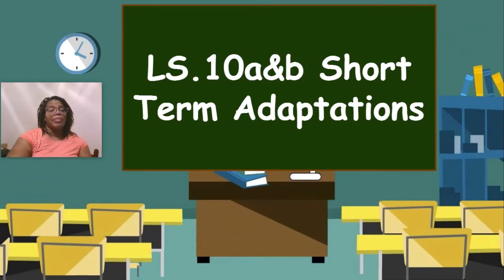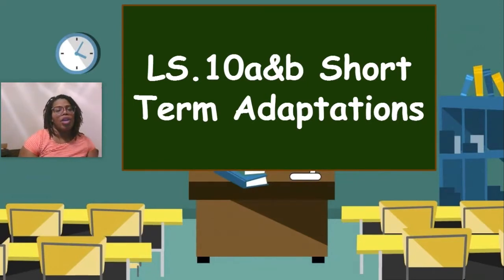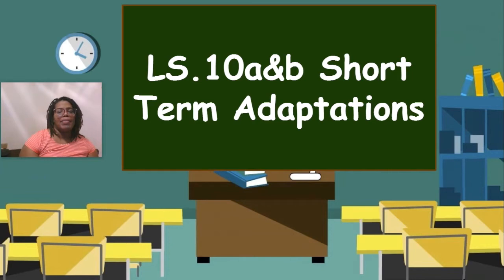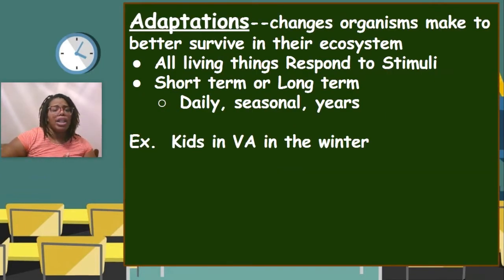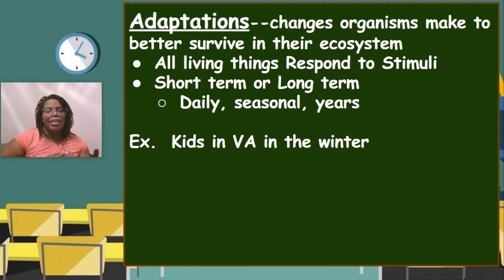This unit is called LS10a and b and it discusses short-term adaptations. An adaptation is when an organism changes so that it can survive better in its ecosystem. It's already living there, something happens, and it needs to change what it's doing so it has a better chance of living longer.